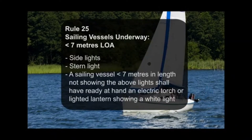Rule 25, Sailing Vessels Underway, less than 7 meters length overall: side lights, stern light. A sailing vessel less than 7 meters in length not showing the above lights shall have ready at hand an electric torch or lighted lantern showing a white light.